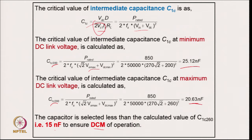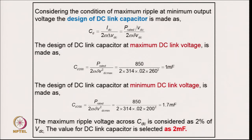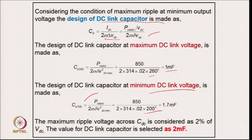Considering the maximum ripple voltage condition for the DC link capacitor: at minimum output voltage of 220 V it comes to 1 mF; for minimum output of 200 V it is 1.7 mF. To ensure ripple never exceeds 2 percent under the worst condition, the value selected must be higher than the largest of the two. The DC link capacitor is selected as 2 mF.